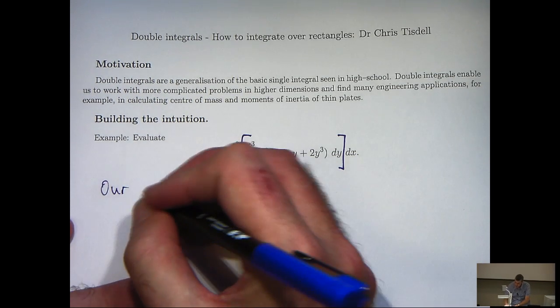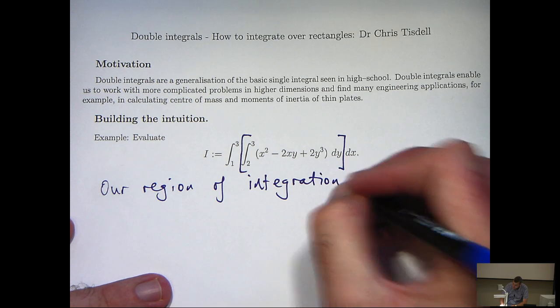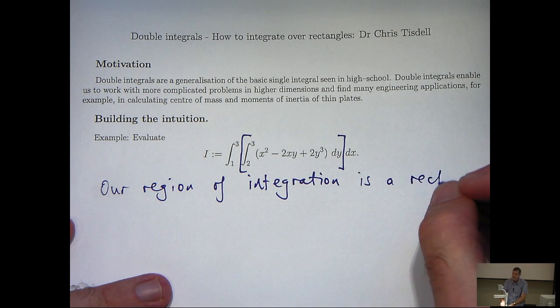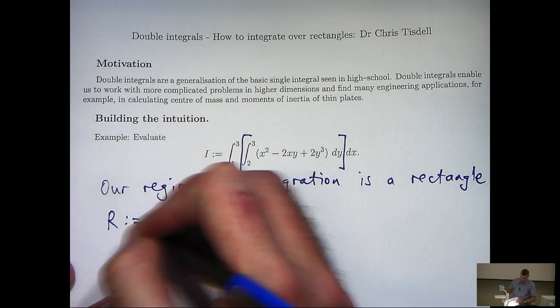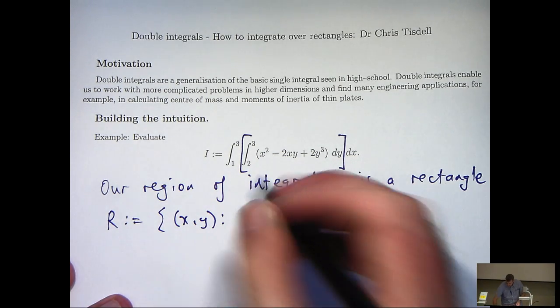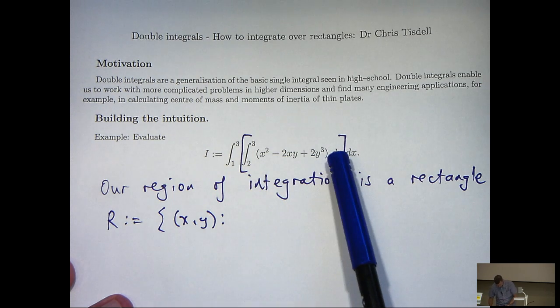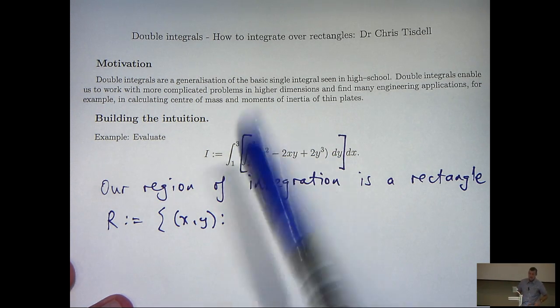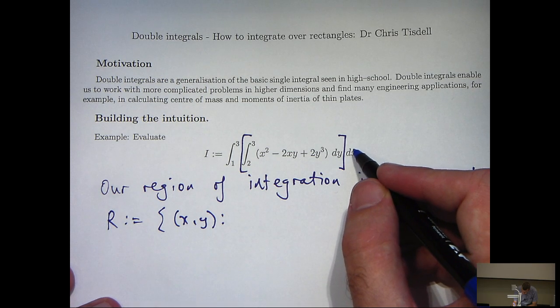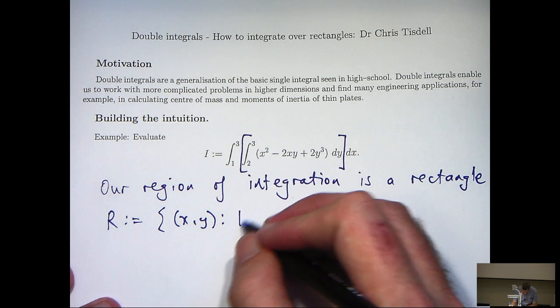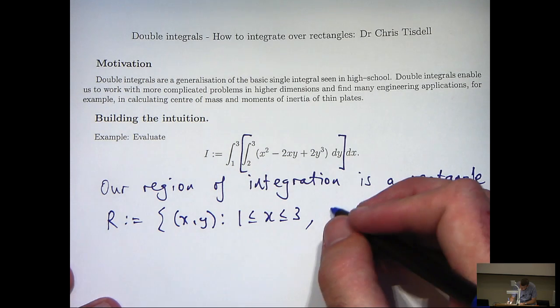Let's realize that our region of integration is a rectangle. You can think of this as an outside differential and an outside integral sign, an inside differential and an inside integral sign. It's important that you team those up because they give you the bounds on the region of integration. So x would be between 1 and 3, and y would be between 2 and 3.